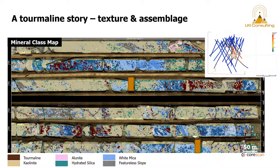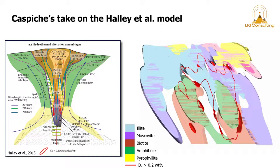This is Caspiche's take on the Haley et al. model. Here, just really quick, we have the different mineral predominant zones, illite in blue, muscovite in purple. The biotite is in this reddish color, amphibole in the green, paraphyllite up here with allianite up here in the pinks and the yellow. And then our copper shell is this in red.